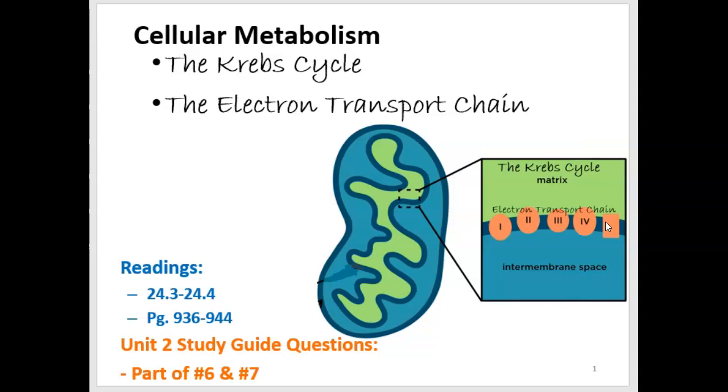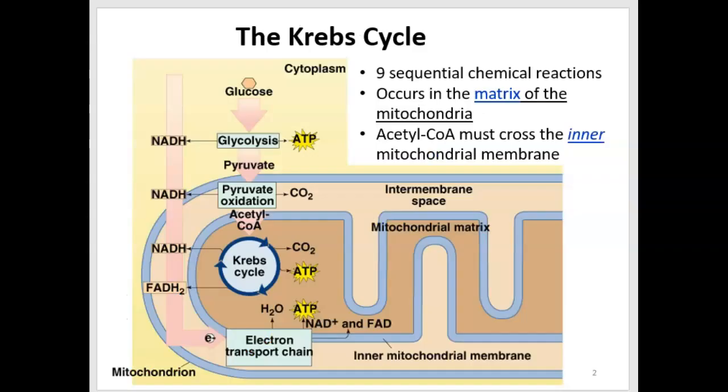The Krebs cycle takes place in the matrix of the mitochondria and the electron transport chain, where we'll have a lot of ATP synthesis, is located and takes place in the inner membrane of the mitochondria.